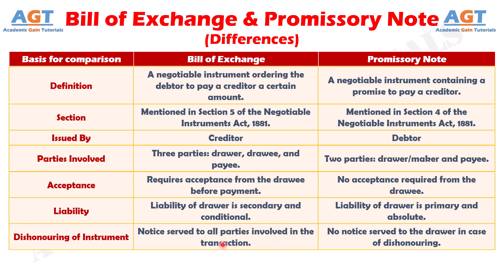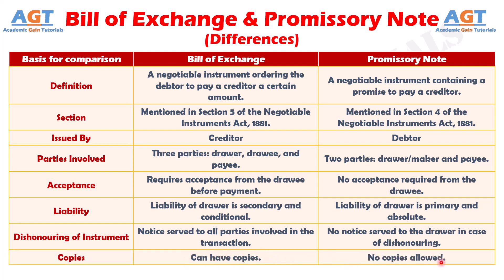Whereas no notice is served to the drawer if a Promissory Note is dishonored. Number eight: A Bill of Exchange can have copies, whereas a Promissory Note does not allow copies.